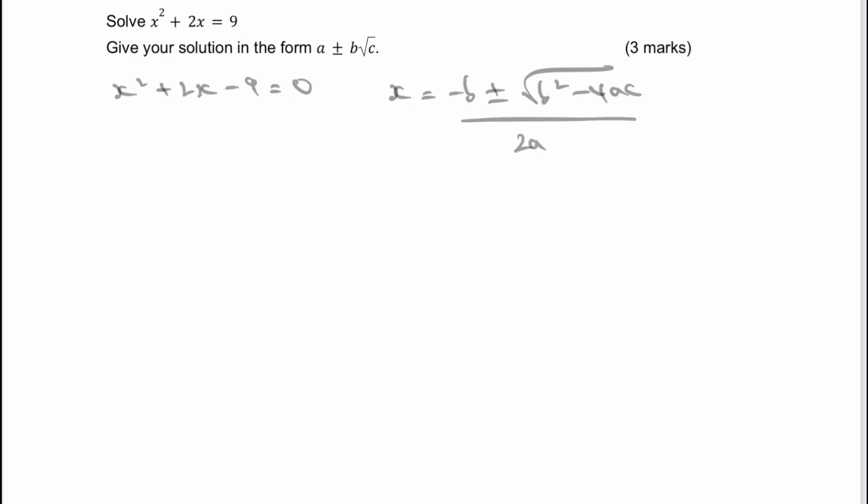Okay, so we've got three values: a, b, and c. Well, this effectively is 1x². So therefore, a = 1. b equals the next value along, which is going to be equal to 2. And c, just be a little bit careful here, is going to be -9.